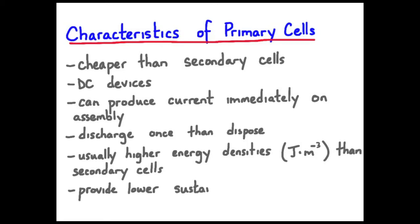Lower sustained discharge currents are also typical with primary cells, lower than secondary.